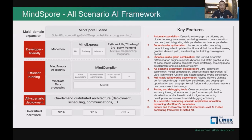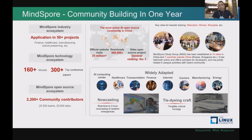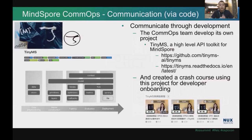We open-sourced MindSpore just almost a year ago, at the end of March last year. Similar to TensorFlow, PyTorch, and MXNet, MindSpore is also a deep learning inference and training framework. This is a bird's eye view of the MindSpore OSPO's work in just one year. I think we have delivered an amazing result — building the most active AI open-source community in China in just one year's time. Let me dive deep into the four aspects of our ComOps work in detail.